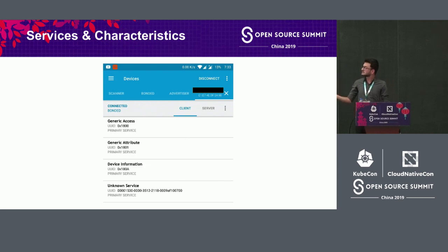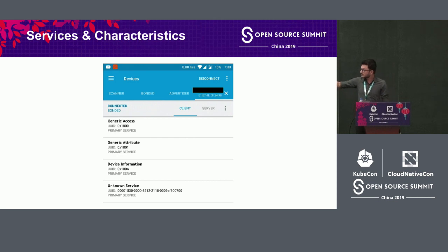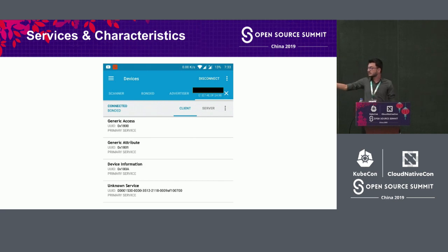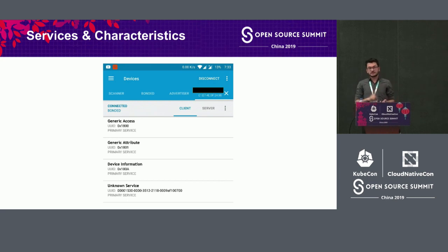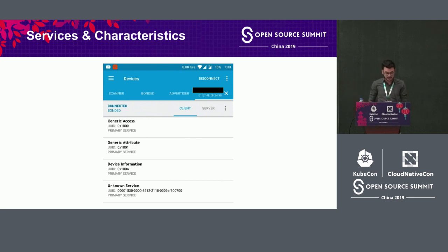There's an app called NRF Connect which allows you to scan nearby BLE devices. If you see the app, there is something called 'Device Information' which has a UUID. Device Information is actually a service — if you open it up, you'd see the software revision number, hardware revision number, and the device name itself. This is the actual definition of service and characteristics.